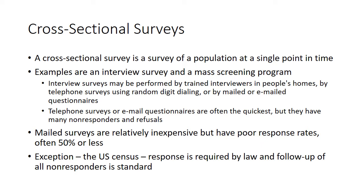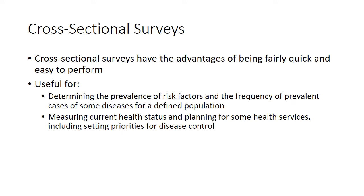Relatively speaking, cross-sectional surveys are inexpensive and easy to perform, though some are more labor intensive — a good example being the U.S. Census, which is required by law, follows up all non-responders, and occurs every 10 years. They are useful for looking at prevalence of risk factors or frequency of prevalent disease cases in a defined population, measuring current health status, and planning health services. While non-responders are common, you can at least look for trends over time and start to identify associations.